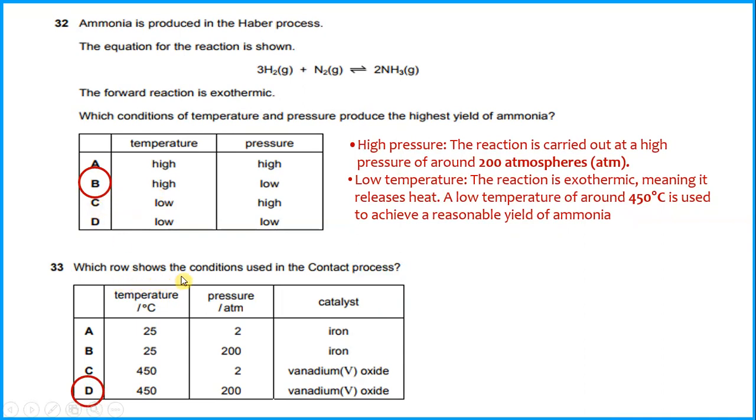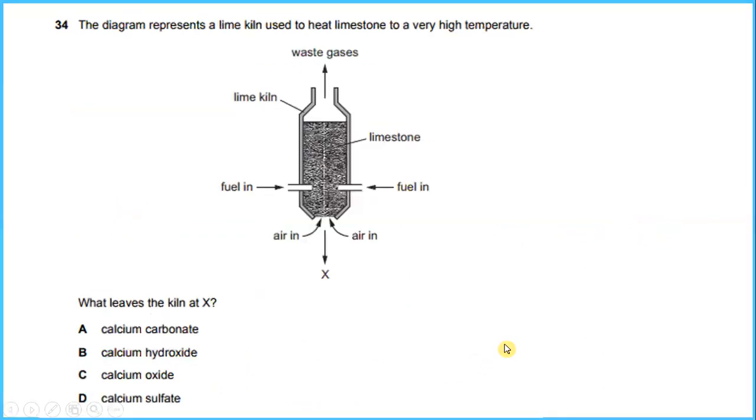Which row shows the conditions used in the contact process? In this case we require temperature about 450 degrees Celsius and pressure is around 200, and the catalyst that we use during the Haber process is vanadium V oxide.